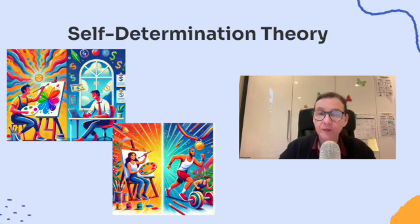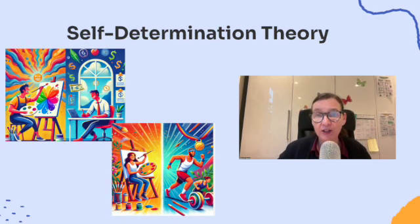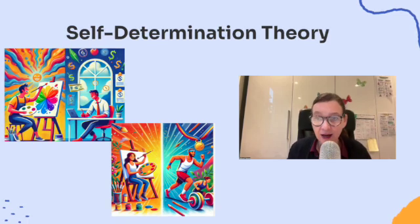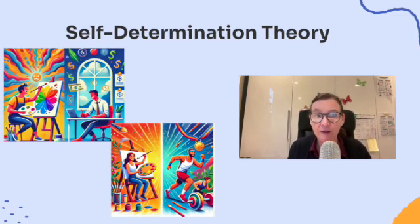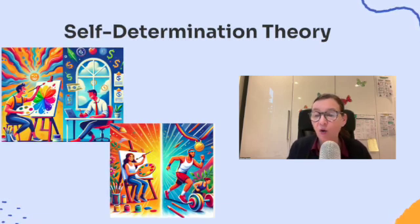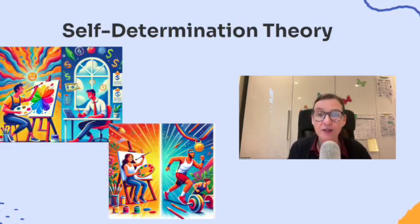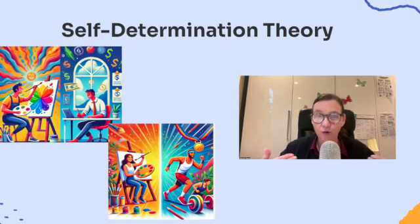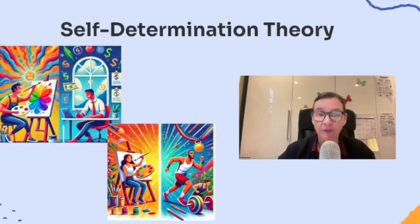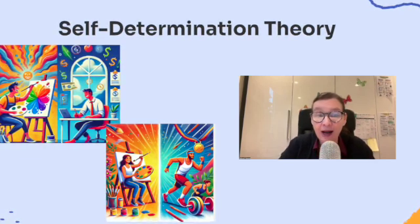Now let's look at self-determination theory, which explains what drives us to do the things we do. In simple terms, motivation comes from two main sources: intrinsic factors — internal desires like doing something because you enjoy it or because it helps you grow — and extrinsic factors, which are external rewards like money, praise, or recognition. For example, intrinsic motivation is painting because you love art, not expecting any reward.